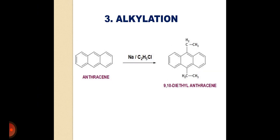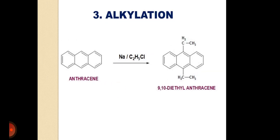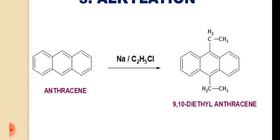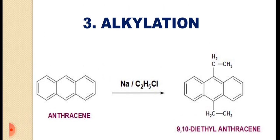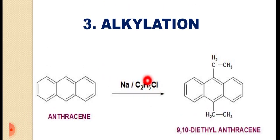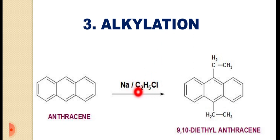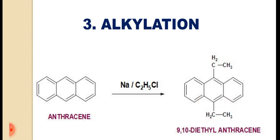The next reaction is the alkylation reaction. This reaction takes place in the presence of sodium and ethyl chloride. The word alkylation means attachment of an alkyl group, and as mentioned, the reaction takes place at the 9 and 10 positions. The product obtained is 9,10-diethylanthracene.